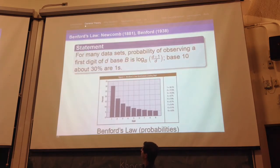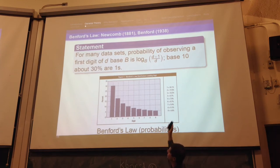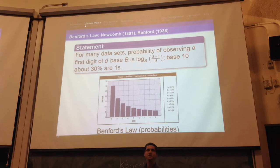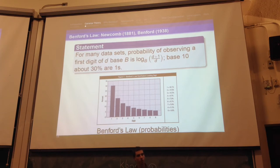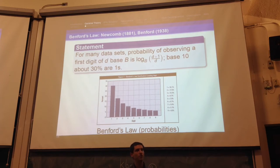Let's talk about general theory. For many data sets, the probability of observing a first digit base B of D is about log base B of (D+1)/D. In base 10, this means about 30% of the time you'll have a first digit of 1. You see this profound bias. What I want to do is show you why this profound bias exists, and then later tell you there's actually no bias if you look at the numbers the right way — this bias is only the effect of us looking at numbers the wrong way.